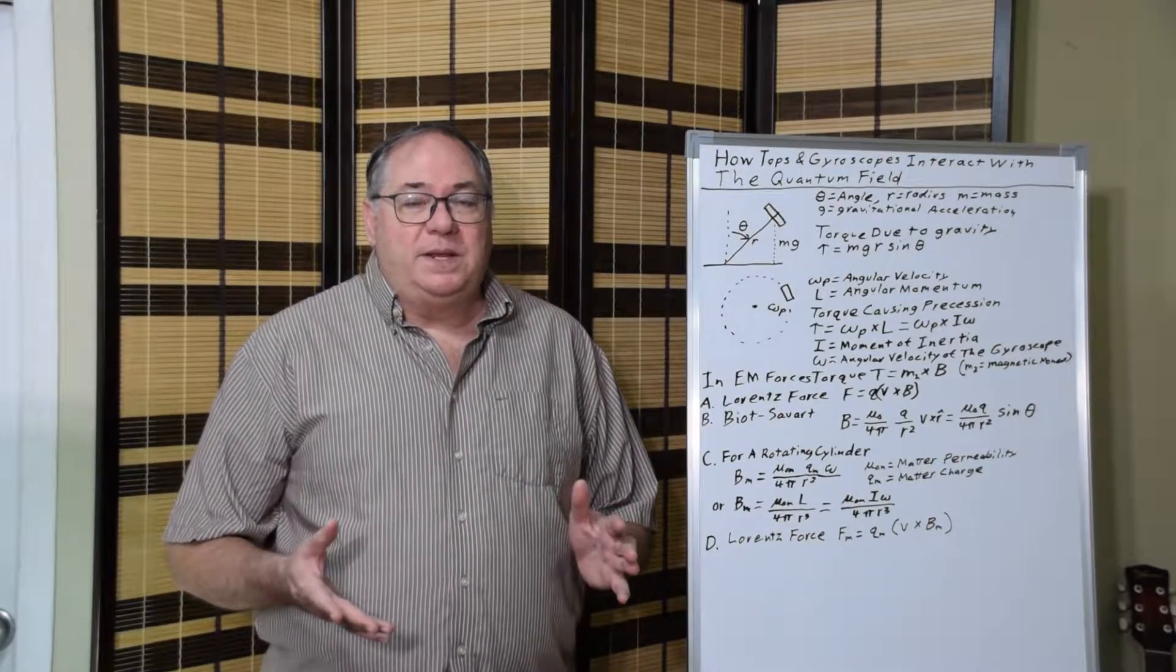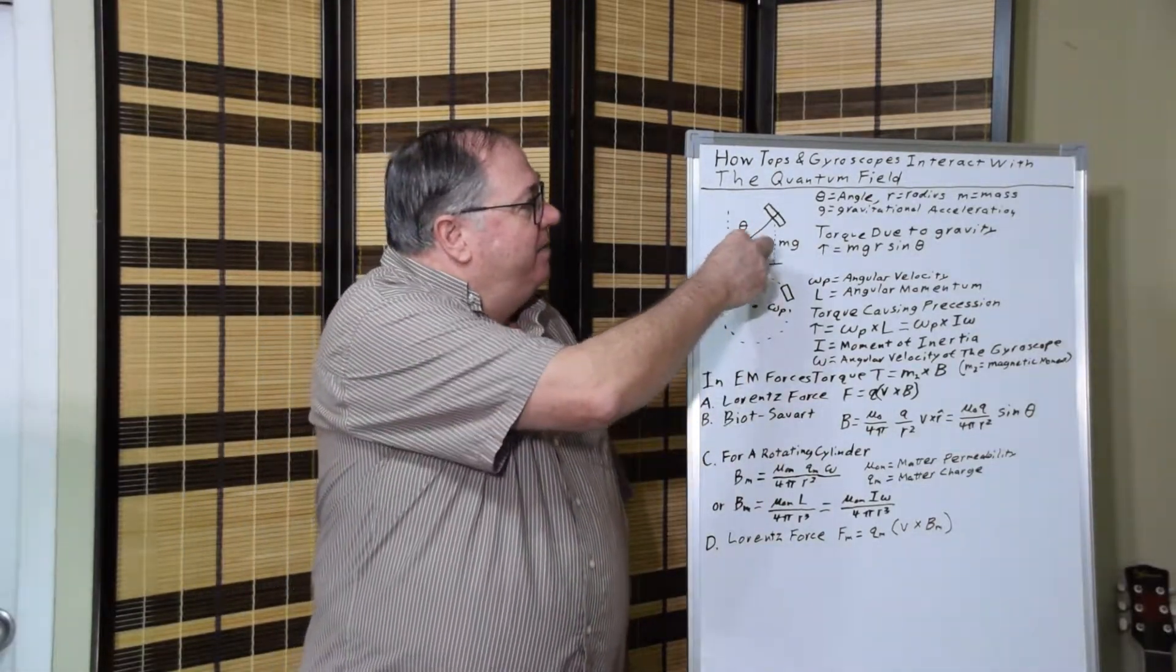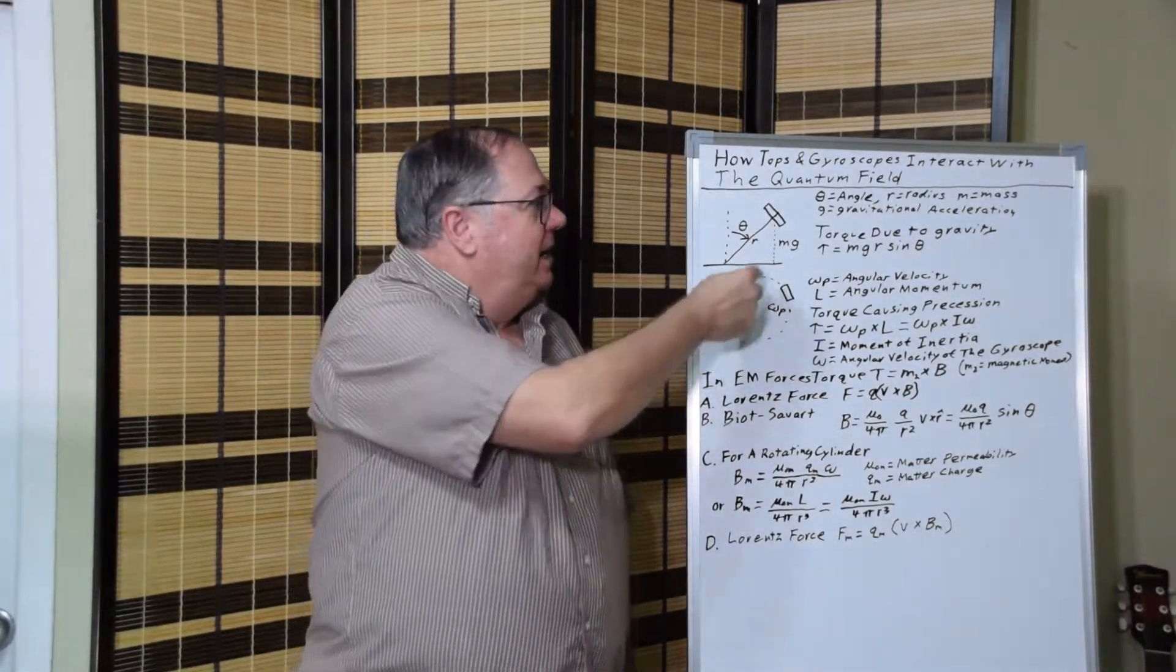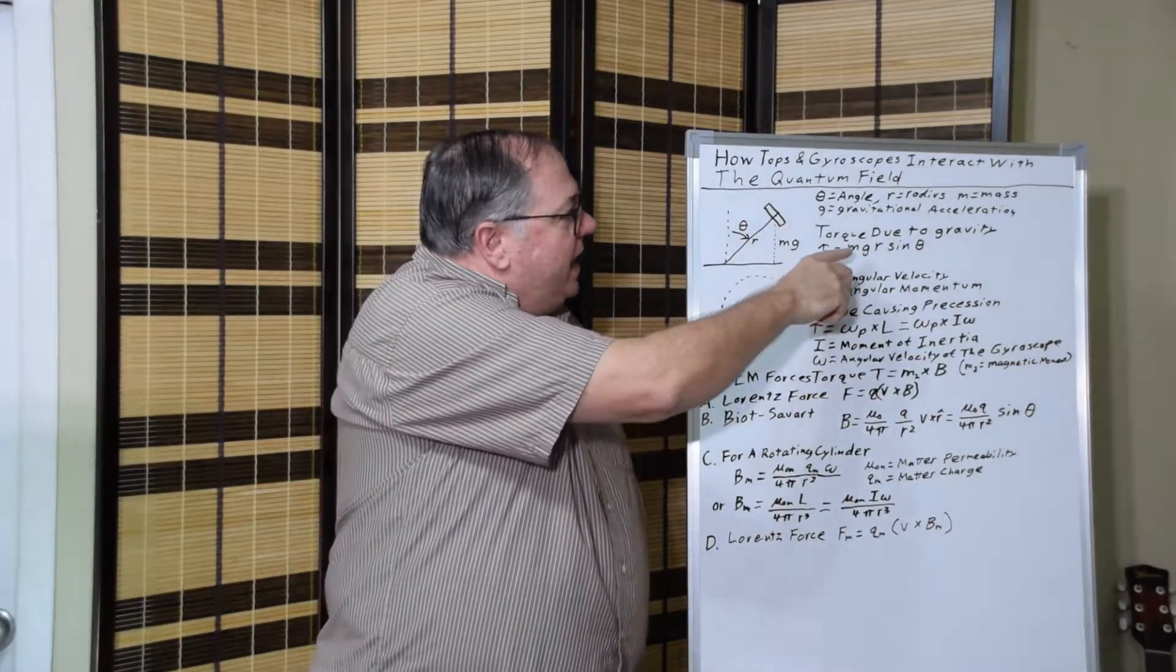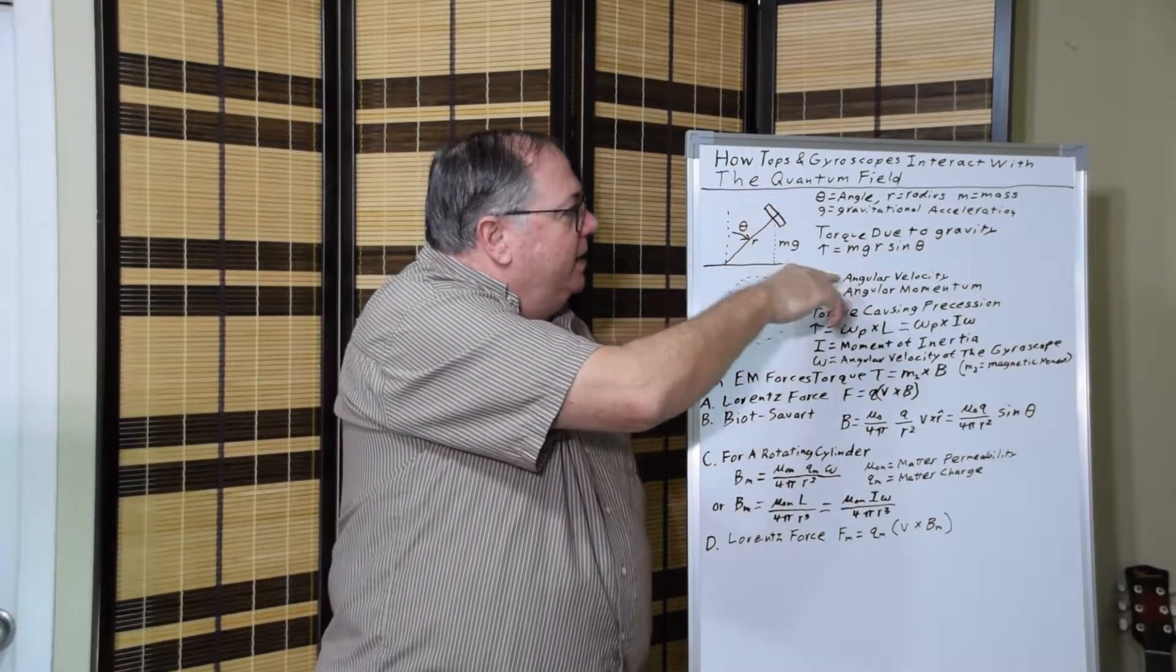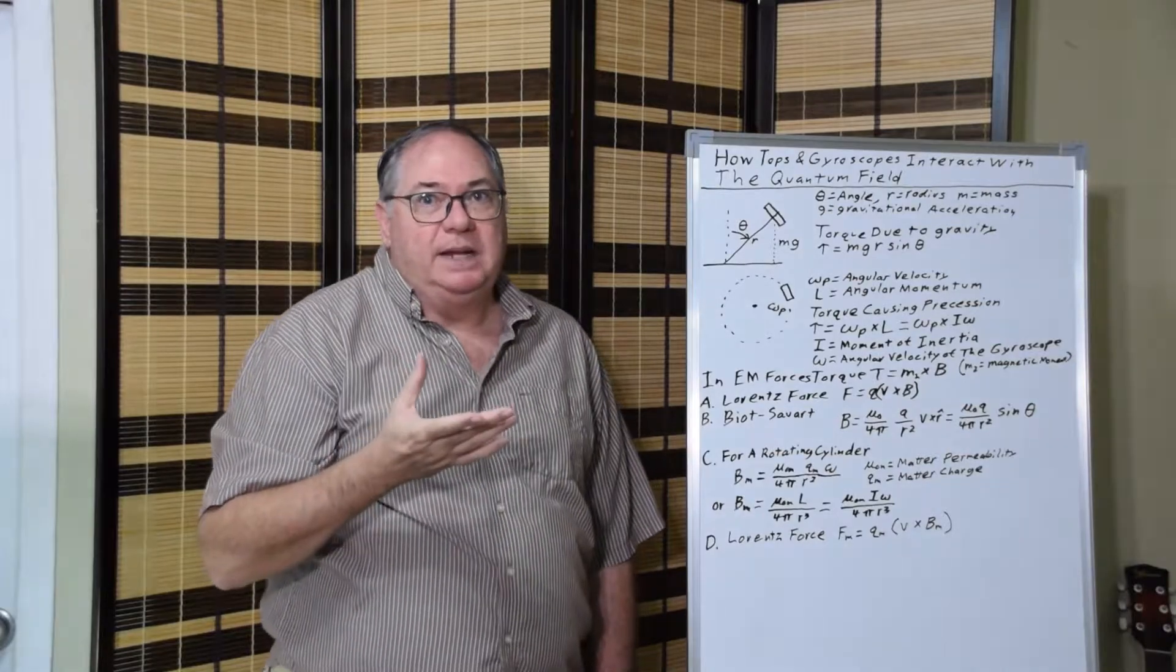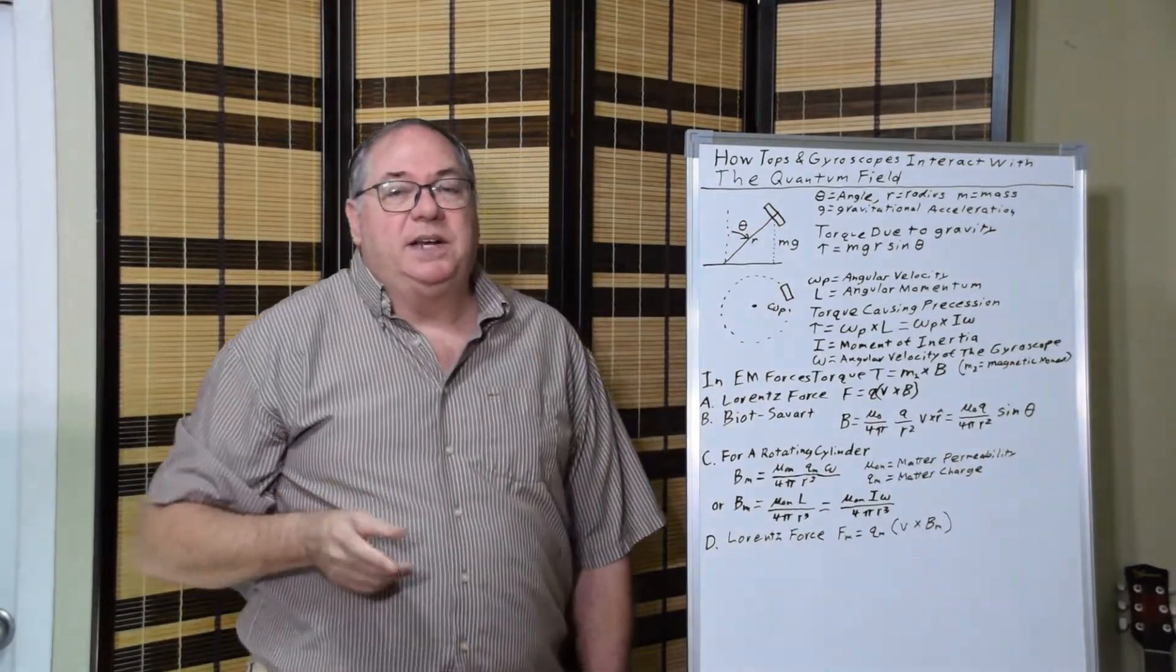To go through the simple math, and hopefully it's not too much for those that aren't mathematically inclined, you have a gyroscope here which I have a cylinder on the shaft. When it's at an angle, it's being accelerated downward by gravity through the center of mass. So you get a term for the torque on it that's due to gravity, T equals mgr sine theta, where m is the mass, r is the radius or the height to the center of mass, and g is the acceleration due to gravity.